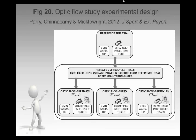One study: we manipulated optic flow. We got subjects to do a self-paced time trial, worked out their average speed, and they performed three different conditions — optic flow slowed down by 15%, kept reflective of their actual speed, or sped up by 15%. We asked them to pace themselves to a fixed speed based on their average speed.